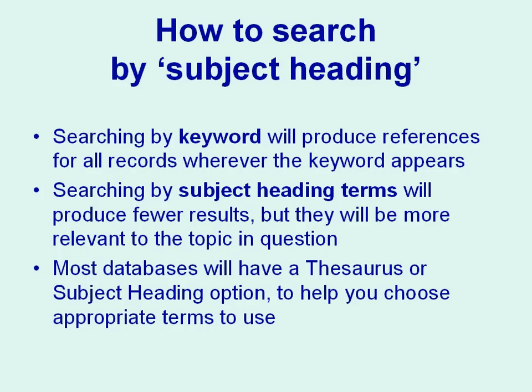Keyword searching can produce huge numbers of results and you may struggle to find those relevant to your specific subject. The database may have picked out a record if the keyword appeared in the abstract, but the article may not actually be about your subject. Using the subject headings or thesaurus option helps identify the subject terms most closely related to your area of interest, so you can search only for references judged to deal with that subject.